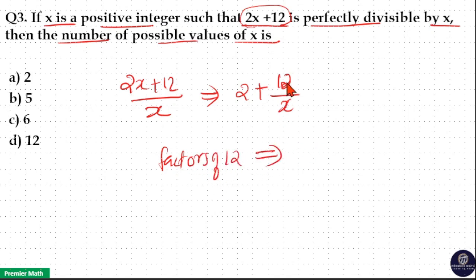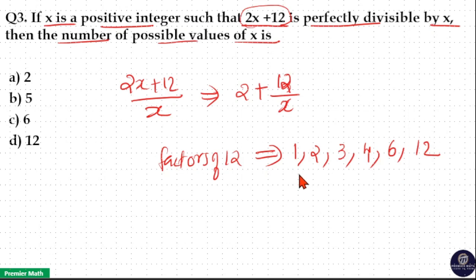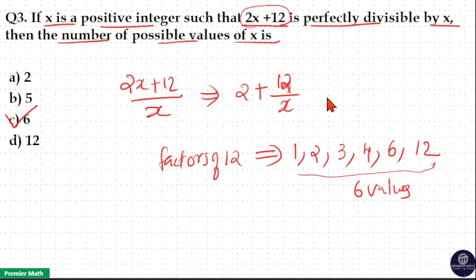12 is divisible by 1, 2, 3, 4, 6, and 12, so the total number of possible values is 6. Option C is your answer — x can have 6 values.